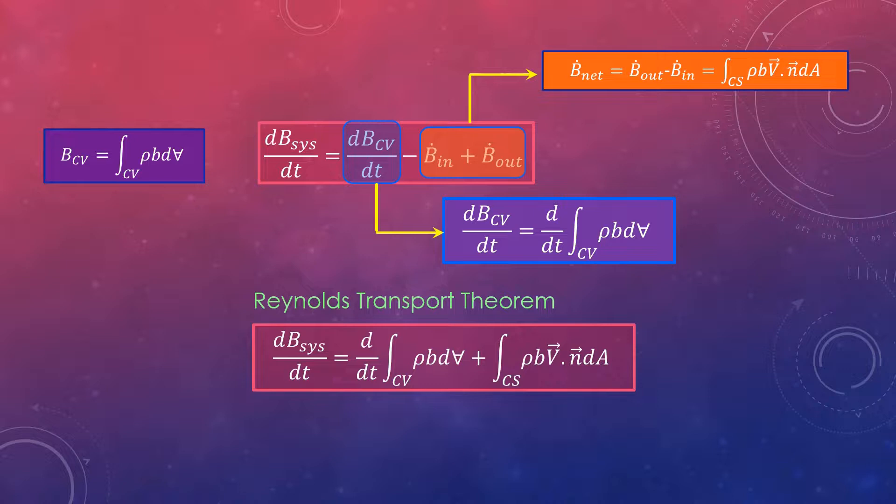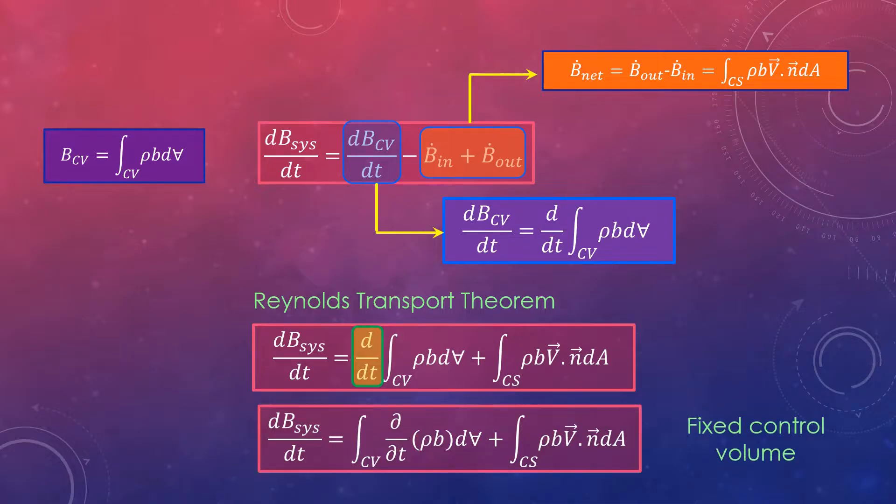Also substituting the expression of the net flux of B out of the control volume yields the Reynolds transport theorem. Now since the control volume is not moving or deforming with time, the time derivative of the first expression on the right hand side can be moved inside the integral since the domain of integration does not change with time. But the time derivative in that case must be expressed as partial derivative since density and quantity b may depend on the position within the control volume. Thus an alternate form of the Reynolds transport theorem for a fixed control volume is given as this.